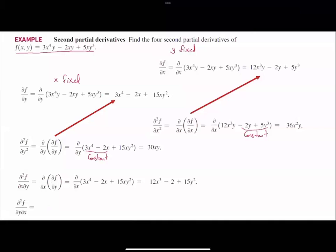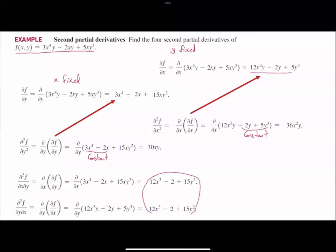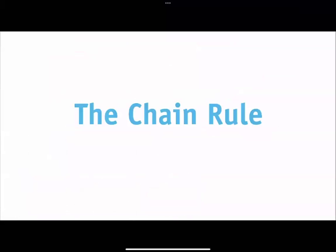What if we change the order? The second partial derivative of f with respect to x then with respect to y means you already took the derivative with respect to x, and now you take the derivative with respect to y. That gives the partial derivative with respect to y of 12x cubed y minus 2y plus 5y cubed, which becomes 12x cubed minus 2 plus 15x squared. Please note that in this case the mixed partial derivatives f_xy and f_yx are the same. Our next topic is the chain rule.